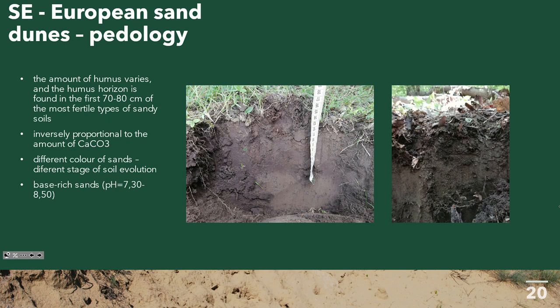Regarding pedological characteristics: the sands have high carbonate content, but also a share of humus in the first 80 centimeters of the ground, with carbonate and humus content inversely proportional. We can distinguish different evolutionary stages of sand in these dunes—some with higher humus, some very whitish or yellowish with low humus, all base-rich.